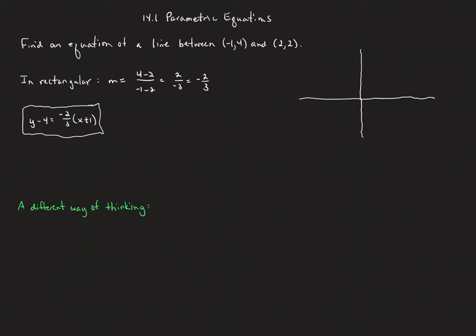Now if we were going to graph that, we would see that we could think of starting at negative 1, 4 — so there's negative 1, and 4 would put us up here. So there's our point negative 1, 4, and then we would go to the point 2, 2, which would be right here. Our line would connect those points and go on forever in each direction.